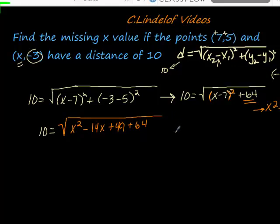I'm gonna expand this out. I get 10 is equal to the square root of x squared minus 14x plus 49 plus 64, which I believe is 113, so positive 113. Where did I get that 113? When I expanded (x-7) squared, the c value of that quadratic was 49. I added it to my 64 and that's where the 113 came from.